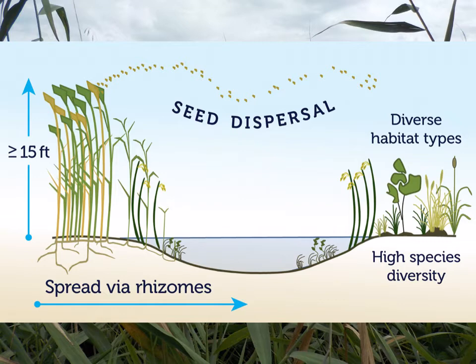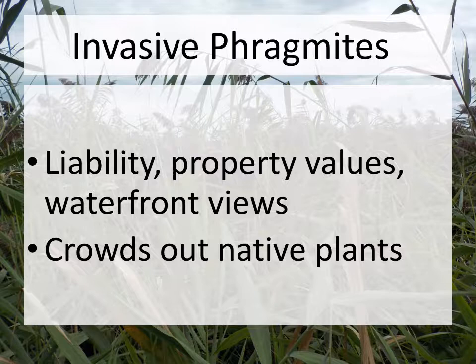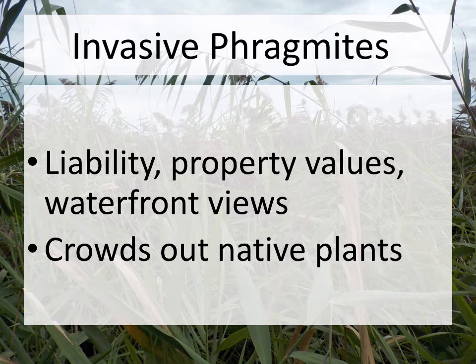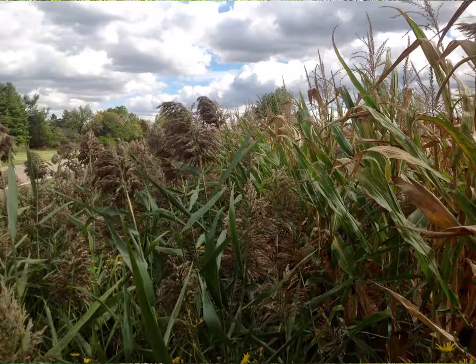Phragmites spreads via horizontal rhizomes, so each stalk standing next to another is connected underground. They also spread by seed — at first we thought the seeds were not viable, but we now know the seeds are about 30% viable, and with over 2,000 seeds on each seed head, that 30% really starts to add up. A study with Grand Valley showed that phragmites decreases property values. It blocks views, water recreation, and sight lines at road intersections, and it crowds out native plants.